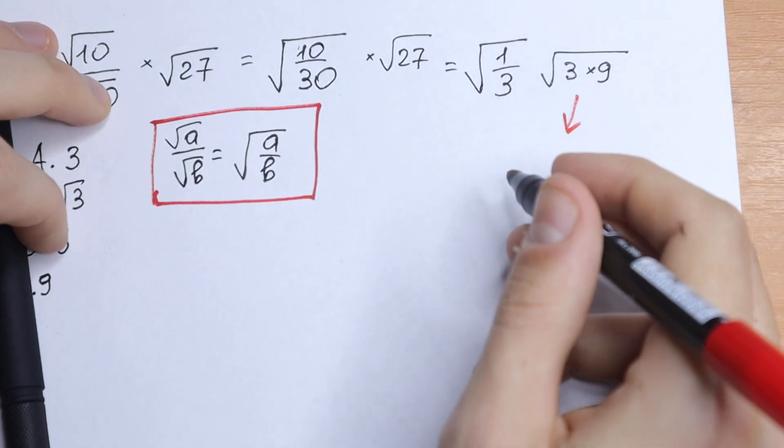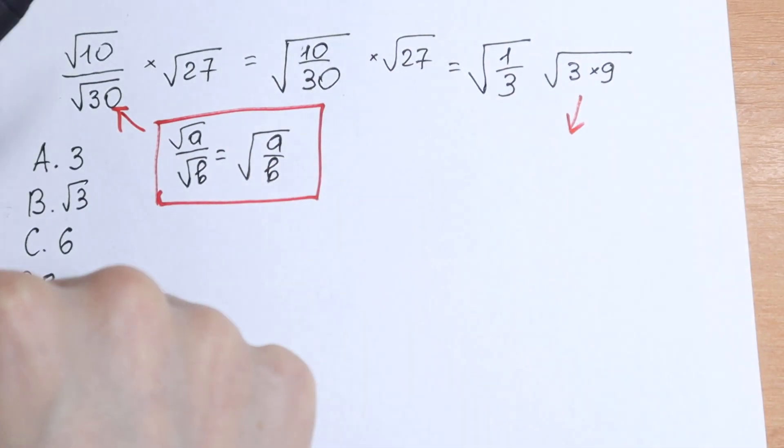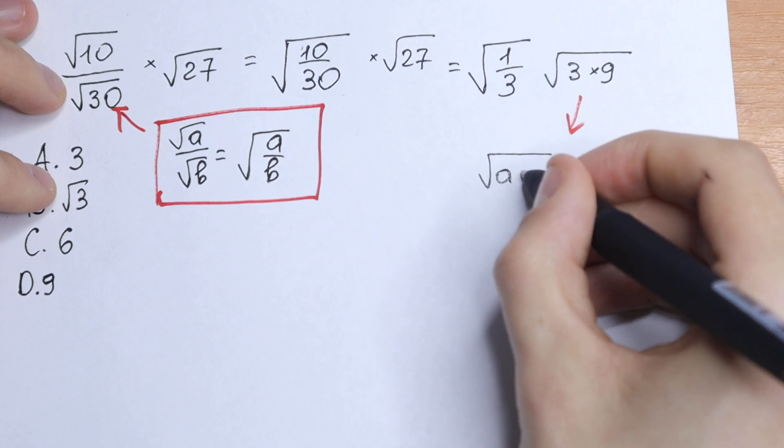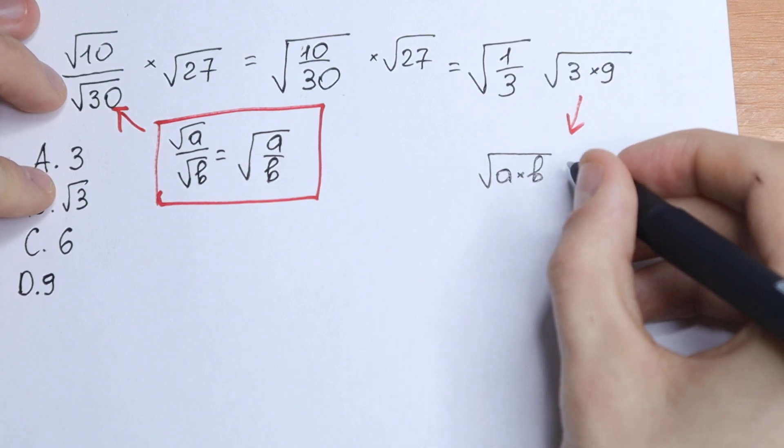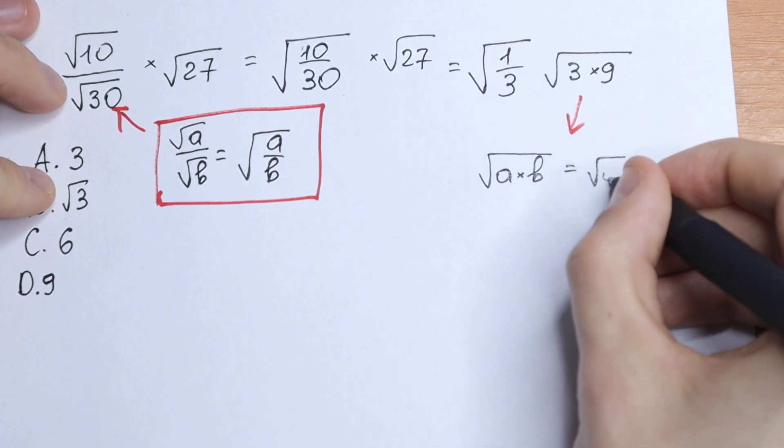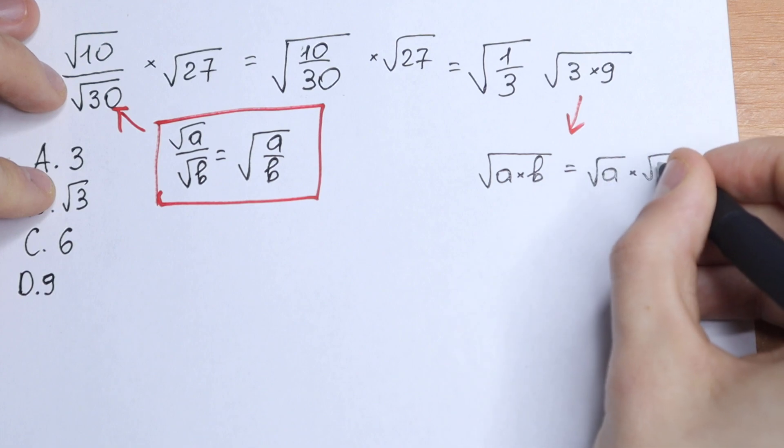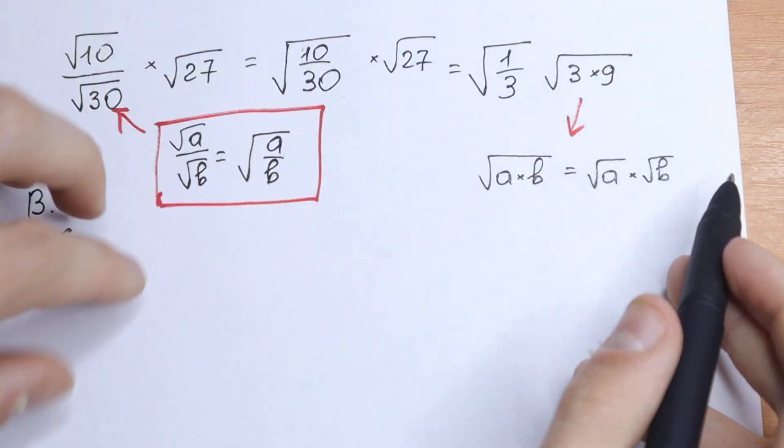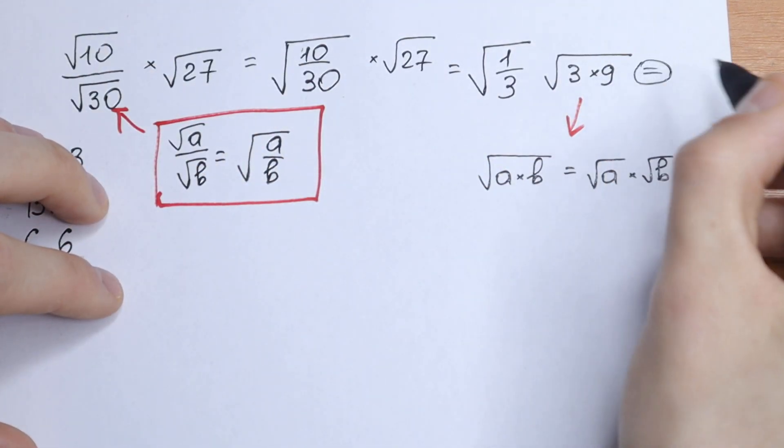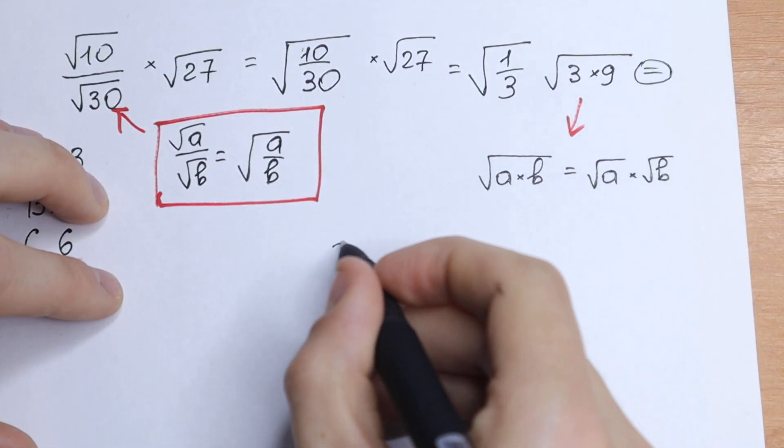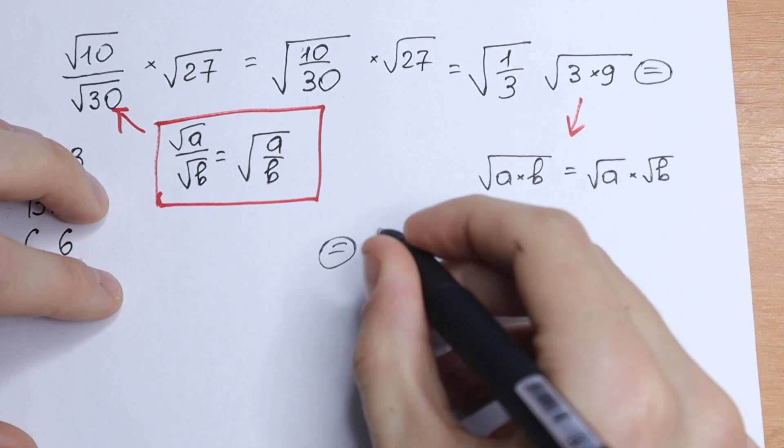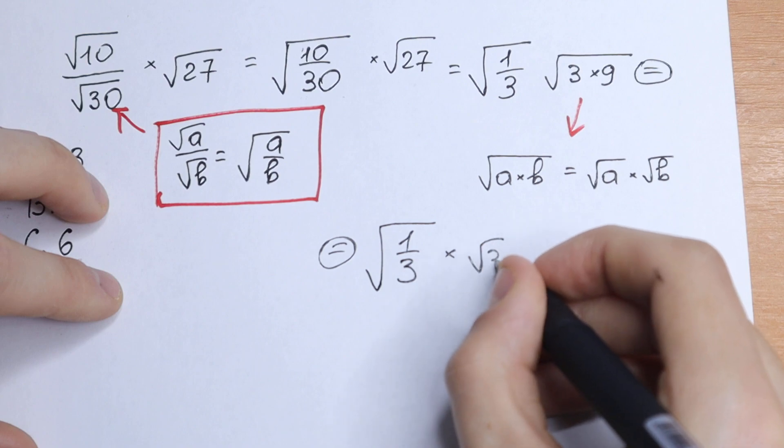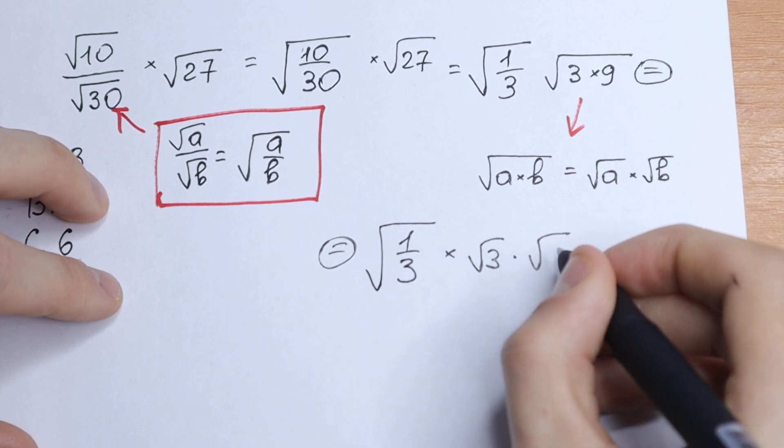I'll write this rule right here. When we have a times b under one square root sign, we can write it in reverse as square root of a times square root of b, separating under each square root sign. So let's do this. Let's write this as square root of 3 times square root of 9. We will have square root of 1 over 3, times square root of 3, times square root of 9.